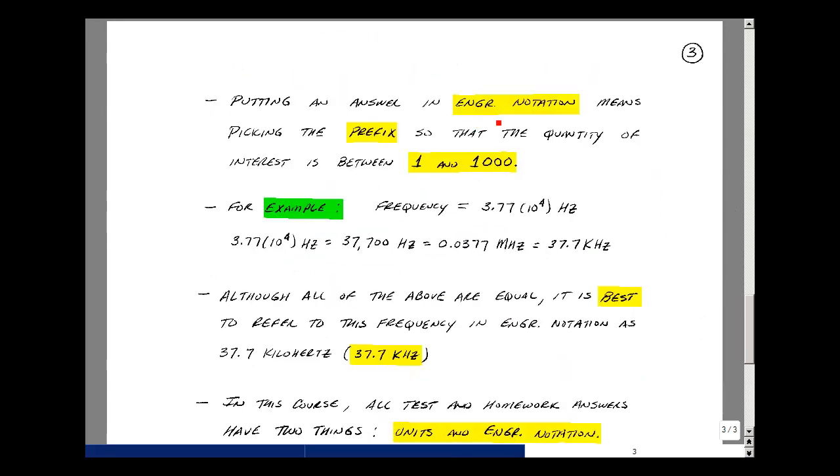Putting an answer in engineering notation means that we're going to pick the prefix on the previous page so that the quantity of interest is between one and a thousand. Let me do an example. Suppose they have a frequency of 3.77 times 10 to the fourth hertz.